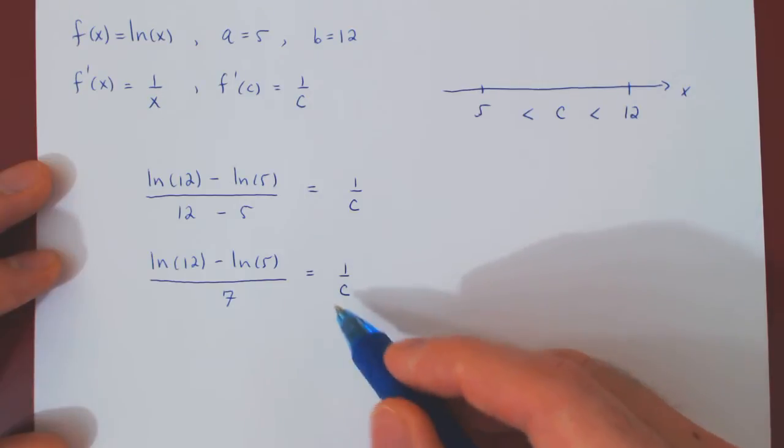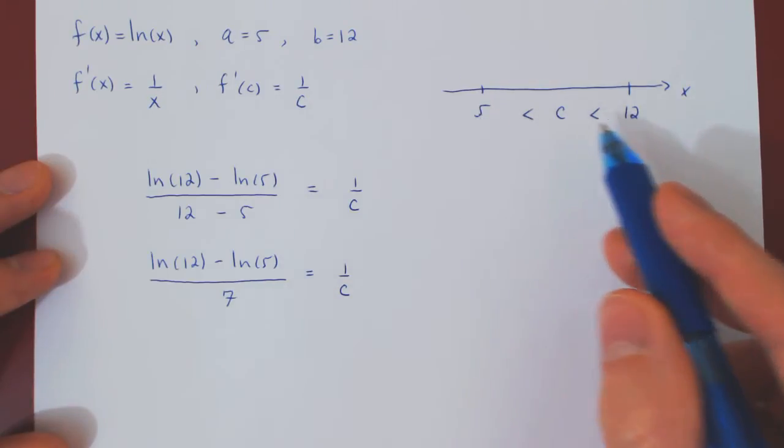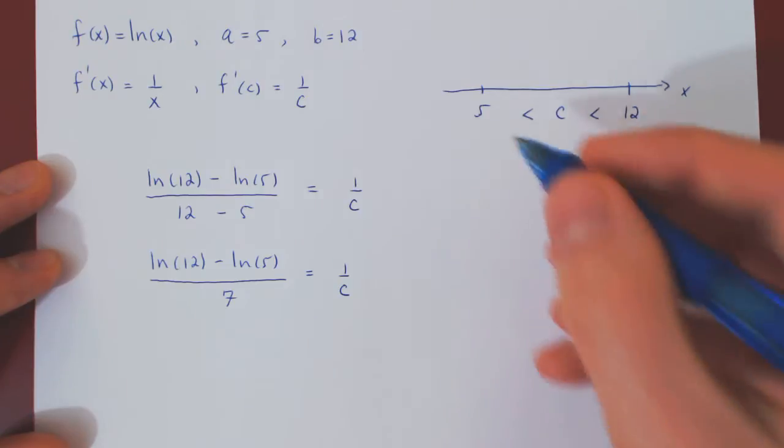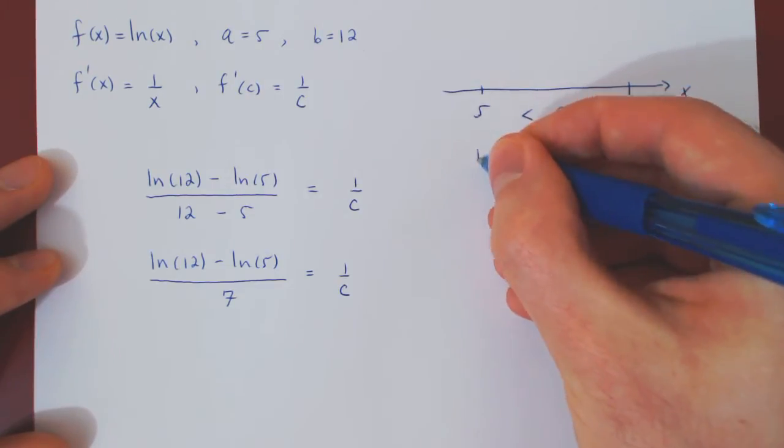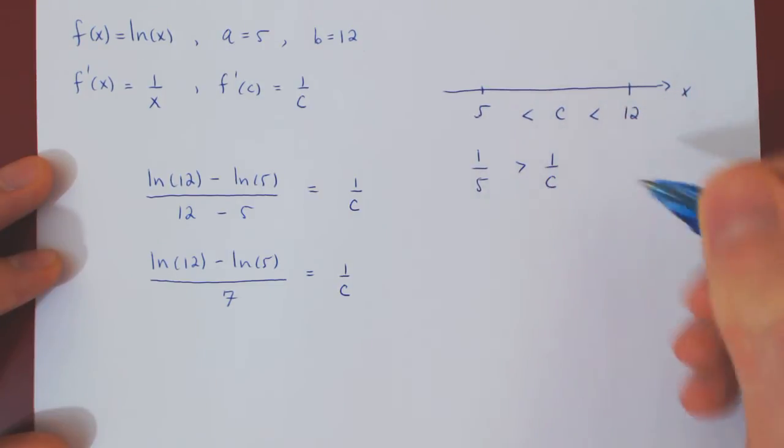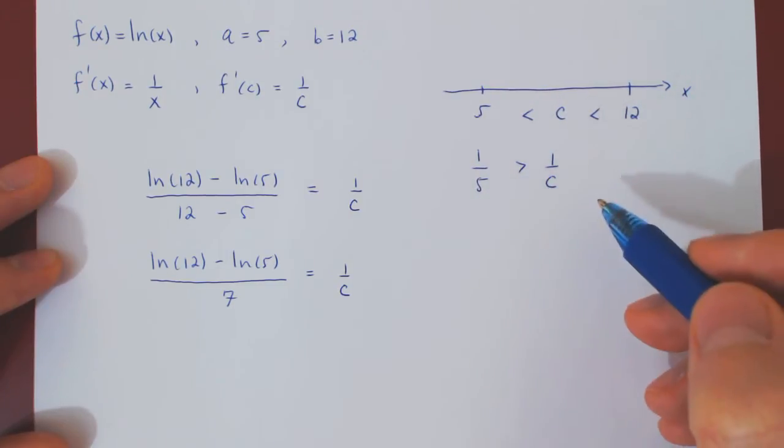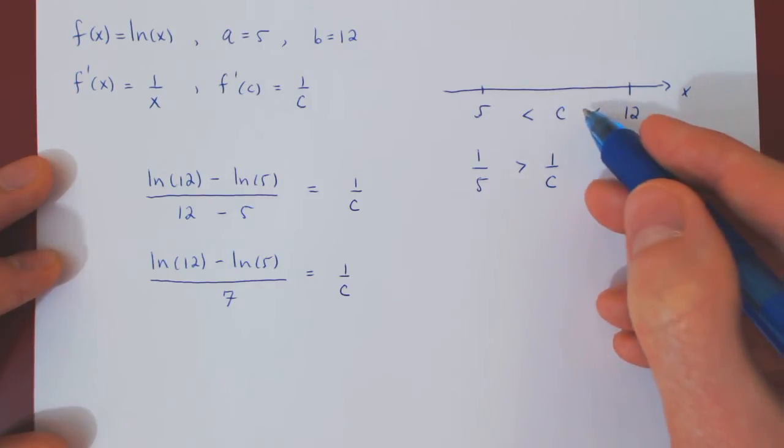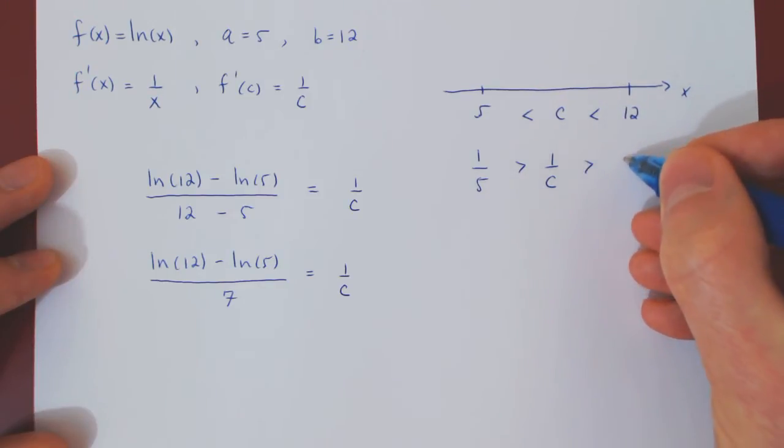And now, we can have an upper and lower bound for c if we simply invert across both inequalities. If 5 is less than c, then 1 over 5 is bigger than 1 over c. And as c is less than 12, 1 over c will be bigger than 1 over 12.